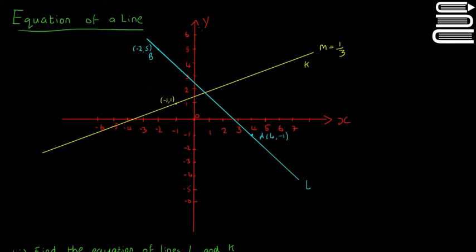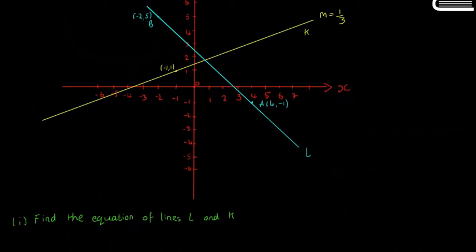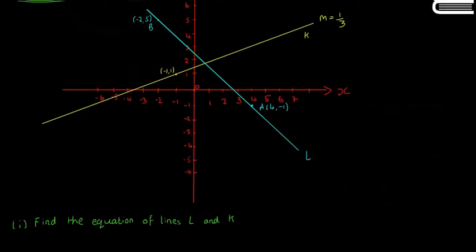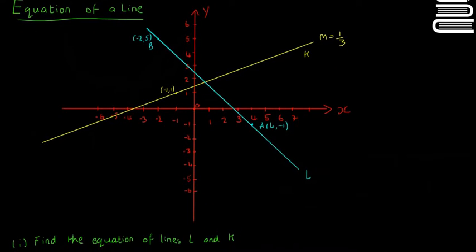So again, we have our red x and y axis. We have a yellow line here with a slope of 1 third, and it goes through the point minus 1, 1. We have a blue line here. We don't know the slope, but we know it goes through minus 2, 5 and 4, minus 1. So they're asking us to find the equation of the lines L and K.